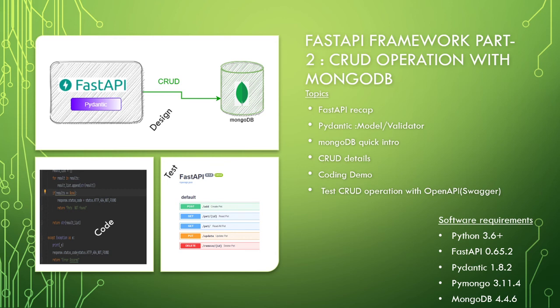Today's topic is FastAPI CRUD operation with MongoDB. FastAPI is one of the high-performance web frameworks for application development available today in Python. Its performance is comparable to Go and Node.js. FastAPI is based on the Starlette framework, which is meant for high performance and async support, and it also comes with modern features like WebSocket, GraphQL, and OpenAPI support.